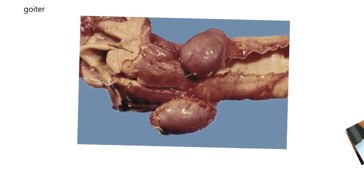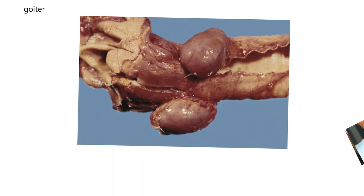This image is taken from a necropsy — the examination of a dead animal to determine its cause of death. In this case, it's a necropsy of a newborn foal. Here is the left thyroid and here is the right thyroid. The point is the thyroid glands are enlarged. A newborn animal can experience goiter if the maternal environment — its mother — didn't have enough thyroid production because of a low amount of iodine.